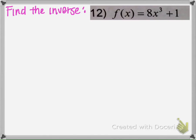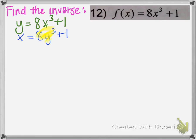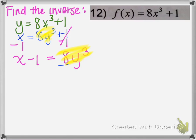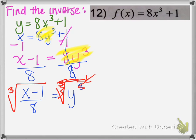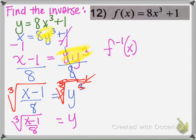Example 12: find the inverse. Switch the x and y, then solve for y. Subtract 1, then divide to eliminate the coefficient in front of the cube term. With the expression now isolated, cube root both sides to cancel the exponent. We now have y by itself. The inverse function is f⁻¹(x) = ∛((x − 1) / 8).